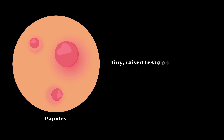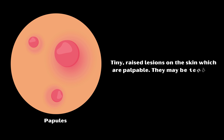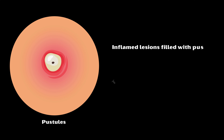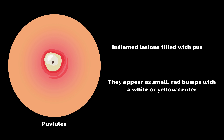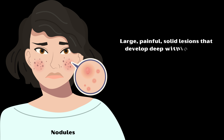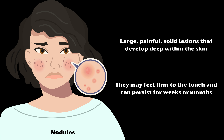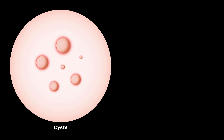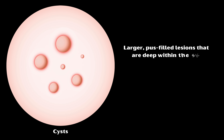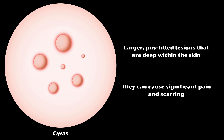Papules are tiny raised lesions on the skin which are palpable and may be tender to touch. Pustules are inflamed lesions filled with pus, appearing as small red bumps with a white or yellow center. Nodules are large, painful, solid lesions that develop deep within the skin; they may feel firm to touch and can persist for weeks or months. Cysts are larger pus-filled lesions that are deep within the skin and can cause significant pain and scarring.